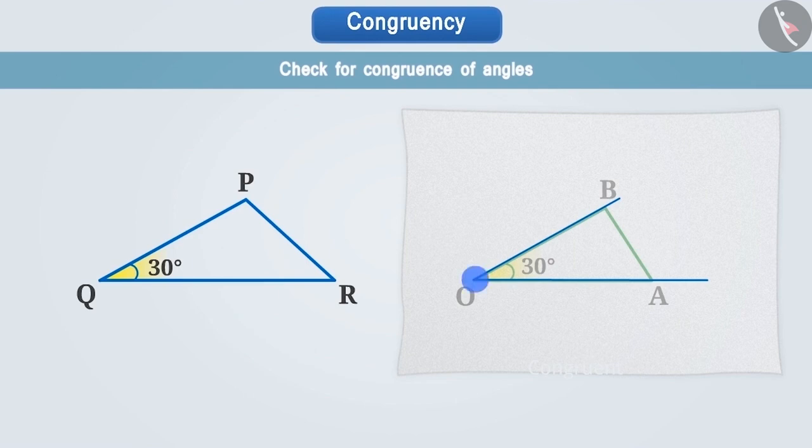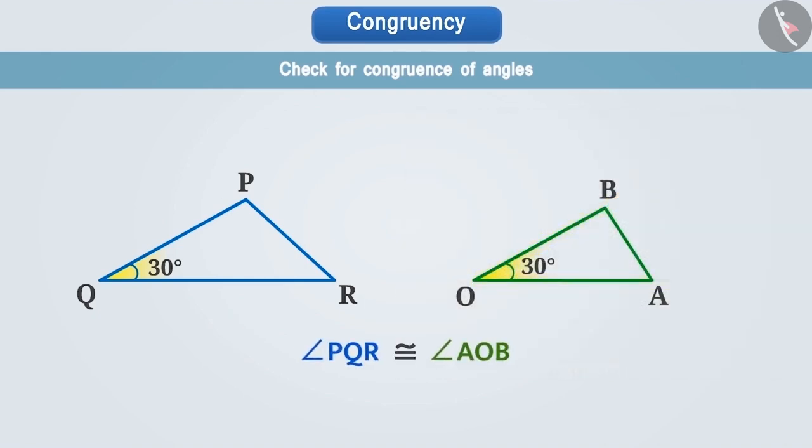we see that vertex Q is covering vertex O, arm QP to arm OB and the arm QR completely covers the arm OA. This shows that both the angles are congruent. That is, angle PQR is congruent to angle AOB.